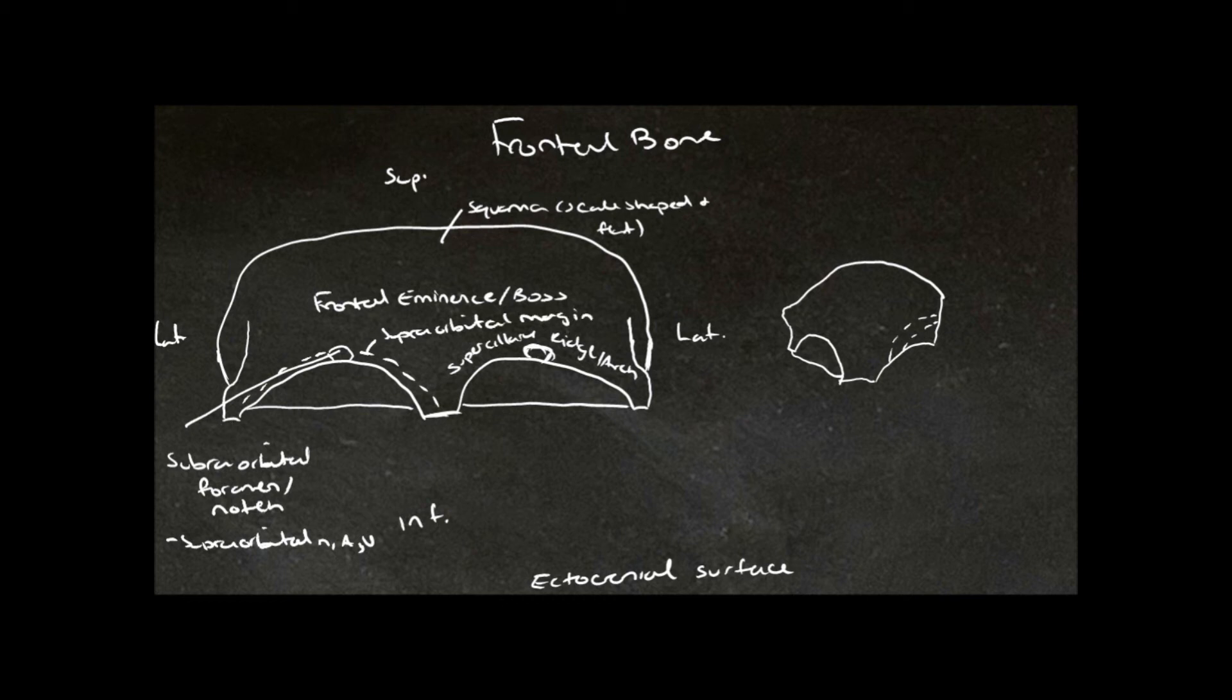Here and here are the zygomatic processes of the frontal bone, and these articulate with the frontal process of the zygomatic bone. In here is the orbital plate. Here is where the nasal bone and the maxillary bone articulate.